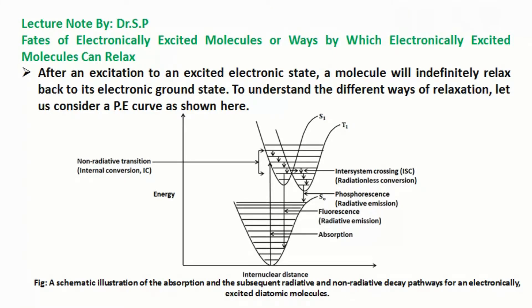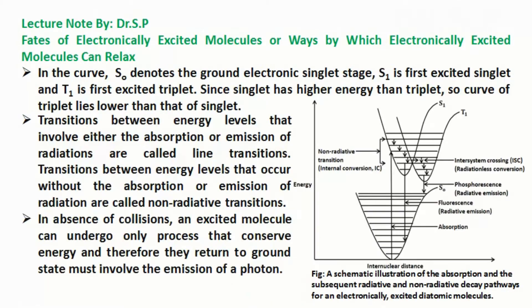To understand the different ways of relaxation, let us consider a PE curve as shown here. In the curve, S0 denotes the ground electronic singlet stage.